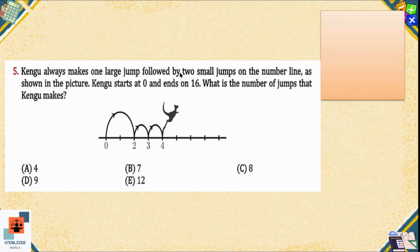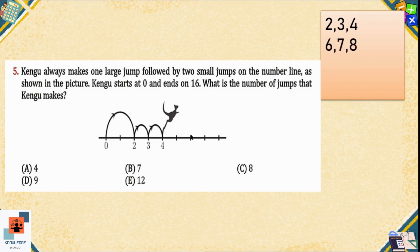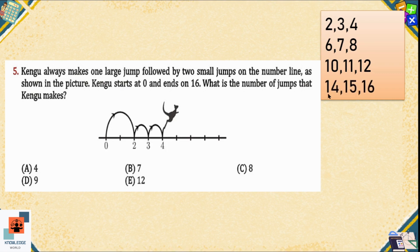Question number five: Kangaroo always makes one large jump followed by two small jumps on the number line. Kangaroo starts at zero and ends on 16. What is the number of jumps that Kangaroo makes? In the first large jump he lands on two, and with two small jumps he lands on three and four. In the second jump he lands on six, then seven and eight. In the third jump he takes a gap of two, then one and one, landing on 12. In the last jump he lands on 14, then 15, and 16. In total, he takes four large jumps to reach 16, so option A is the correct option.